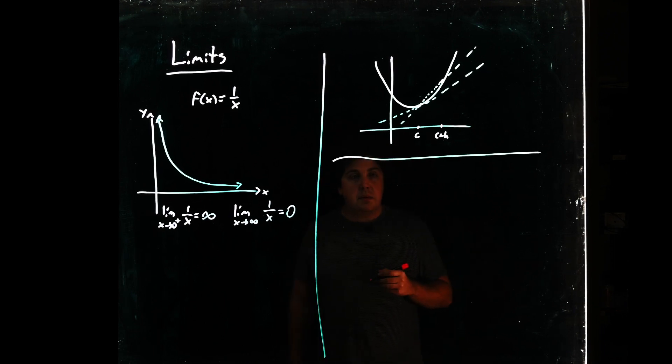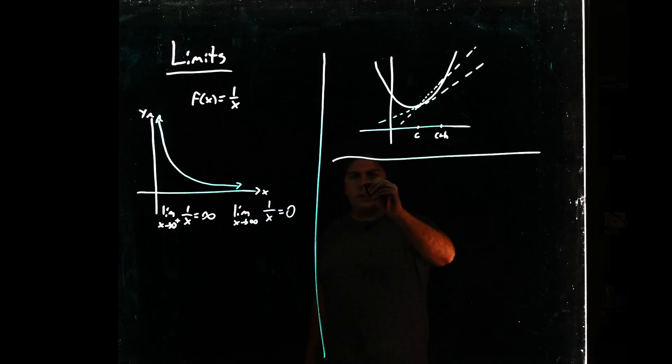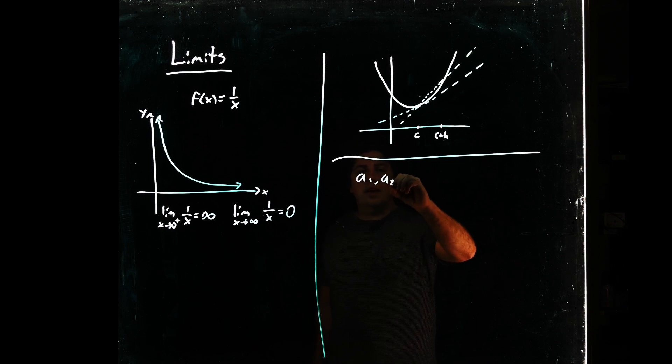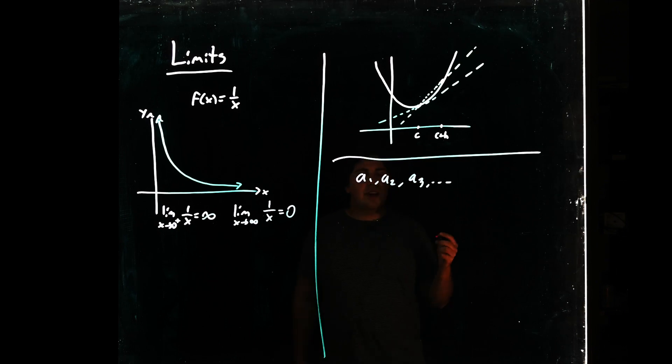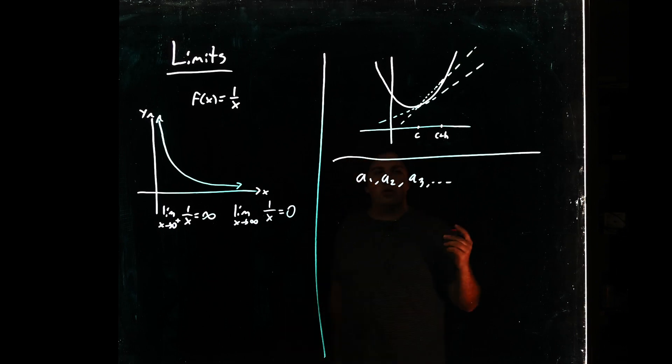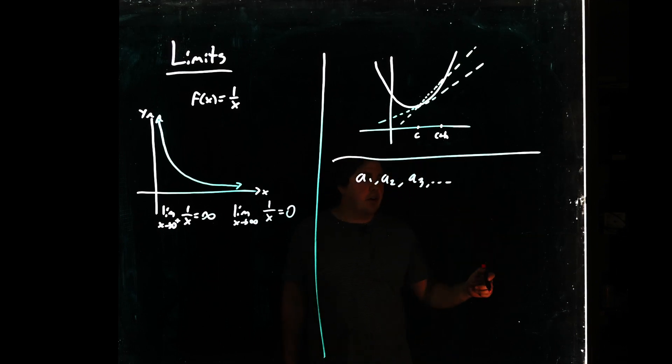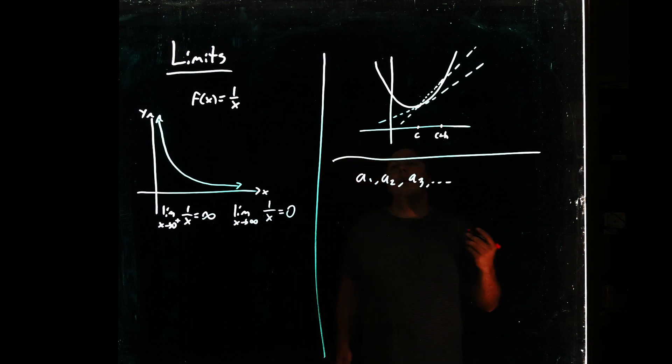So another related limiting process is the limit of sequences. Say you have a bunch of numbers—let's call them a1, a2, a3, etc.—and you want to sort of say somewhere that these numbers go to. Eventually, as n becomes very large, they're going to hit some point, if you will.